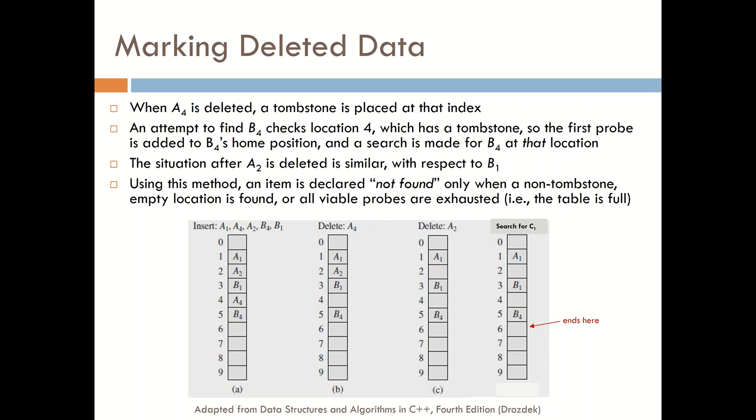Let's take a look at how we would use a tombstone. Beginning in the leftmost picture, we see that A1 was placed in its correct position as was A2, but B1, we hashed into location one and something was already there. And then B2, we went into two and someone was already there. So we went into location three and then the same thing with A4 and B4.